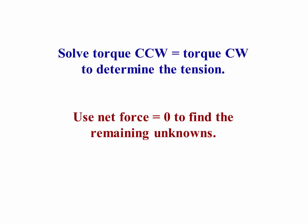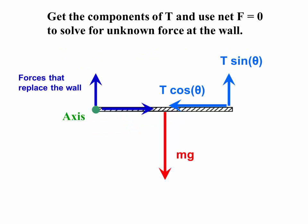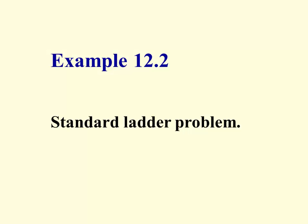We then solve torque counterclockwise equals torque clockwise, determine the tension, and then use net force equals zero to find the remaining unknowns. Again, you break the tension up into its two components and require that the vertical components balance out and that the horizontal components balance out. This problem actually is pretty simple. Even though the answer is not in the back of the book, you ought to be able to do this problem on your own.